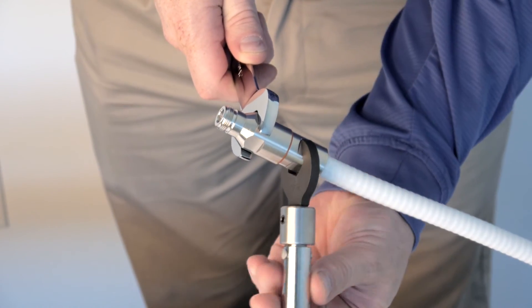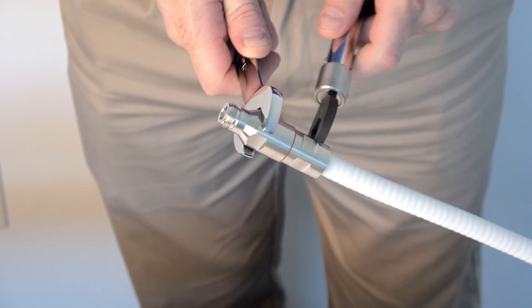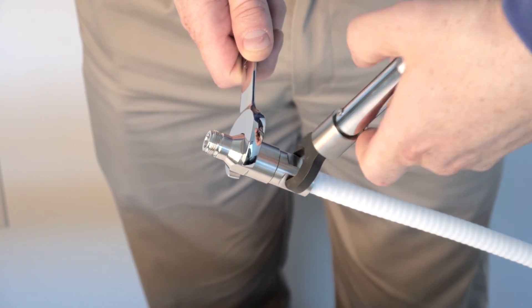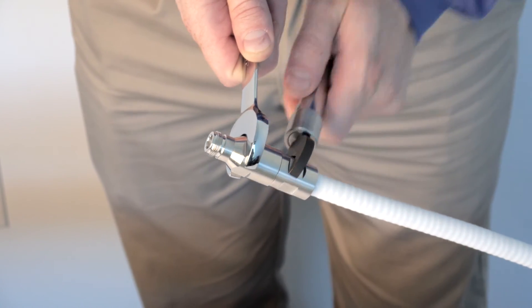With a 21 millimeter open-end wrench, hold connector top in place. With a 19 millimeter open-end torque wrench set to 15 foot-pounds, tighten connector base until fully tightened.